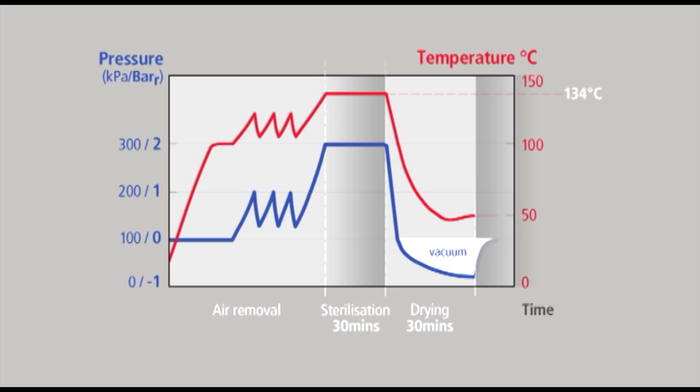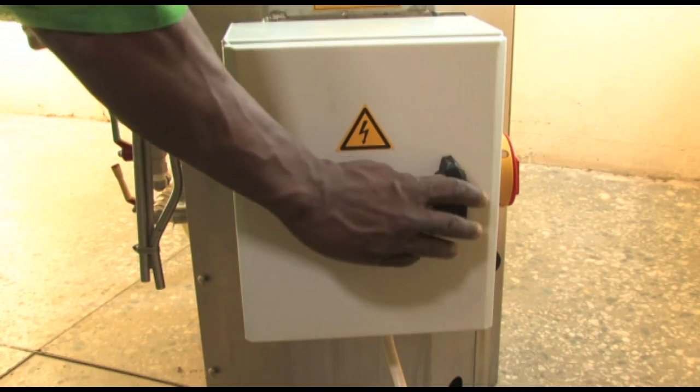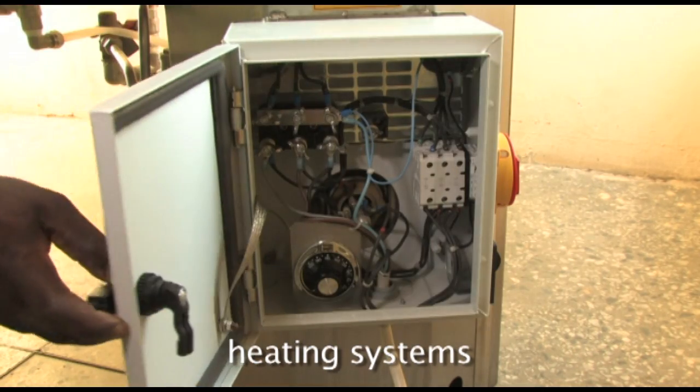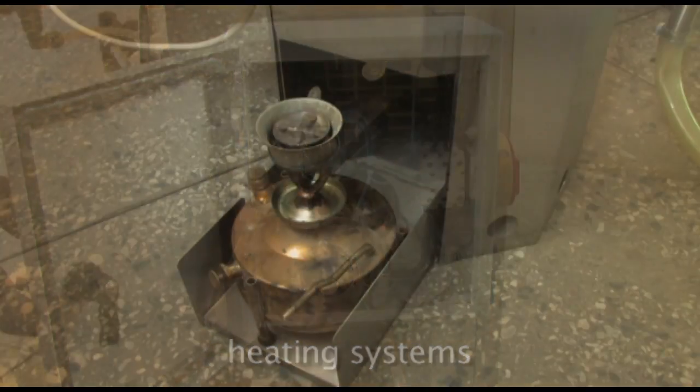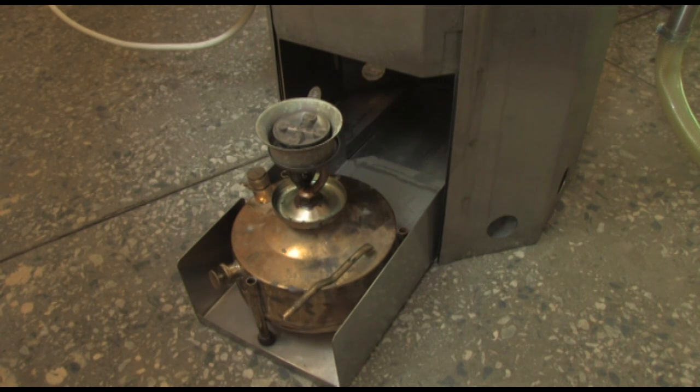Finally, filtered air is allowed back into the autoclave so that the door can be opened and the load taken out. The autoclave can be heated by electricity or kerosene. Heating by gas is also possible.